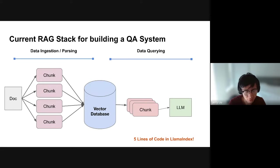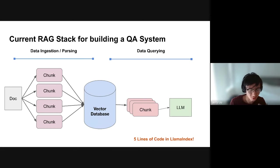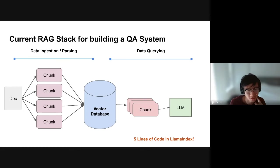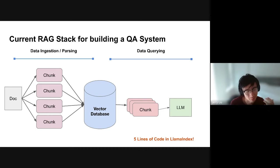Two advanced use cases: one is multi-document comparisons, and the other is embedded tables in PDFs. In the first section, we'll walk through how the basic RAG stack works and some general sense of the types of failures you might encounter when you build this.